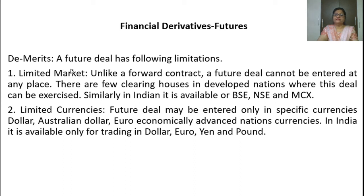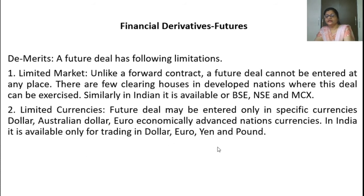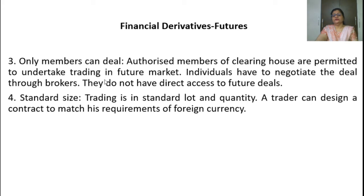The demerits of a future deal are as follows. First, limited market — it cannot be offered by everyone; you have to go to BSE, NSE, or MCX to get futures. Second, limited currencies — you cannot get it for all currencies, only for Dollar, Australian Dollar, Euro, Yen, and Pound; in India, you can get Dollar, Euro, Yen, and Pound. Third, only members can deal — you cannot directly deal; it must be done through members. Fourth, standard size — they are offered only in standard sizes such as thousands, and cannot be bought in fractions.